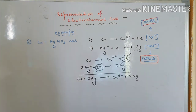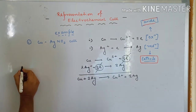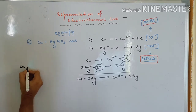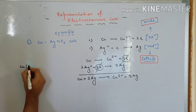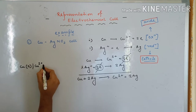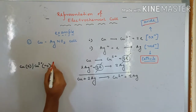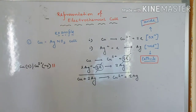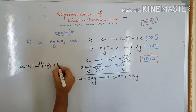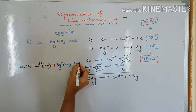Now we are going to represent the cell. Remember the last discussion - on the left-hand side, first write the metal of the anode, which is copper in solid state, then followed by Cu²⁺ in solution. Here comes the salt bridge. Then the cathode part, where the electrolyte Ag⁺ in aqueous medium is written first, followed by Ag which is solid.